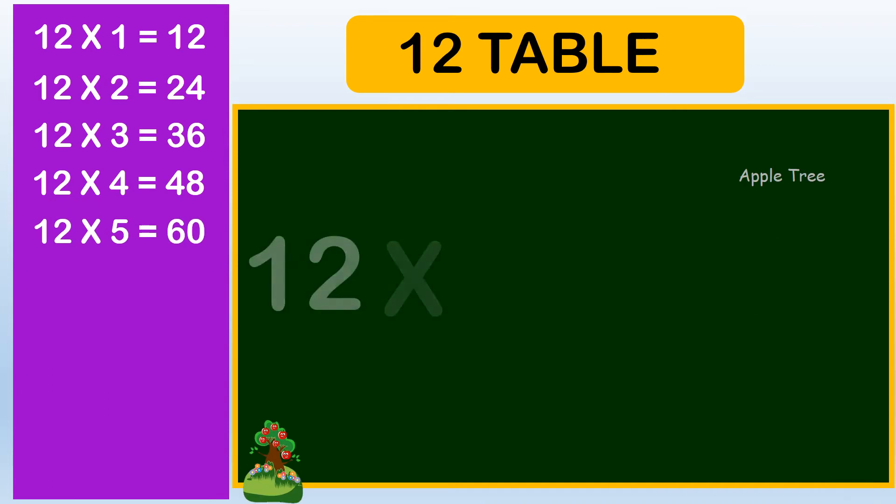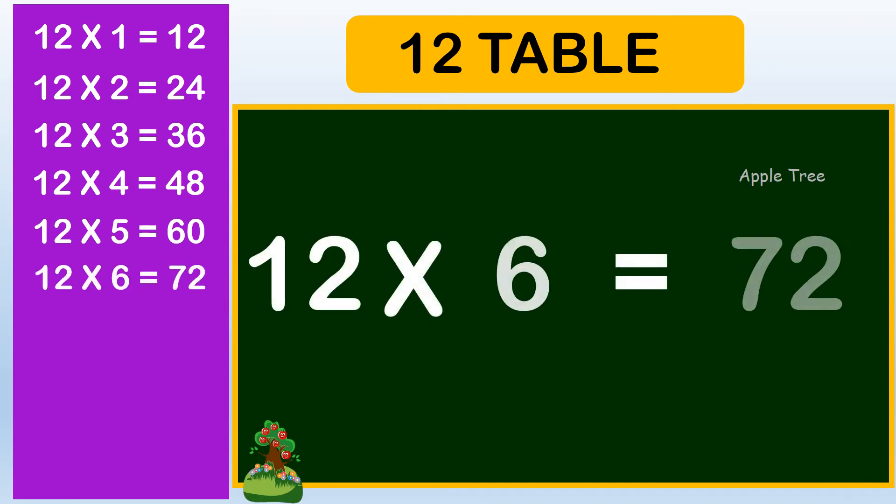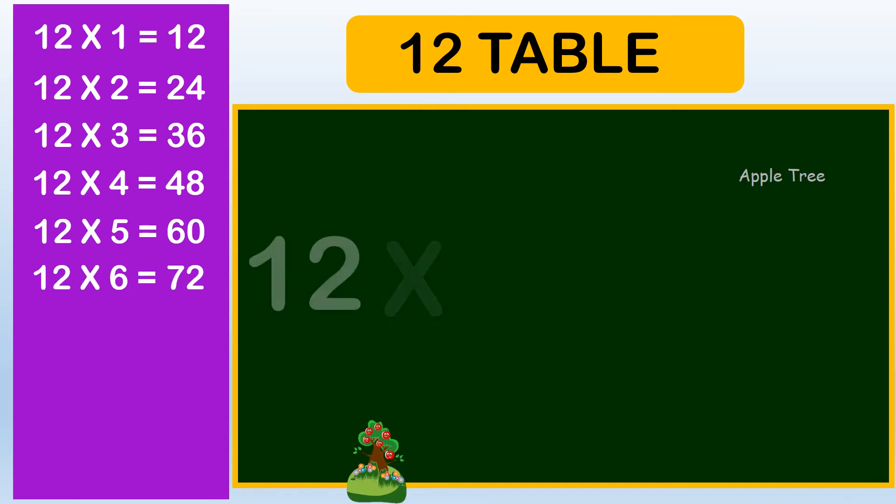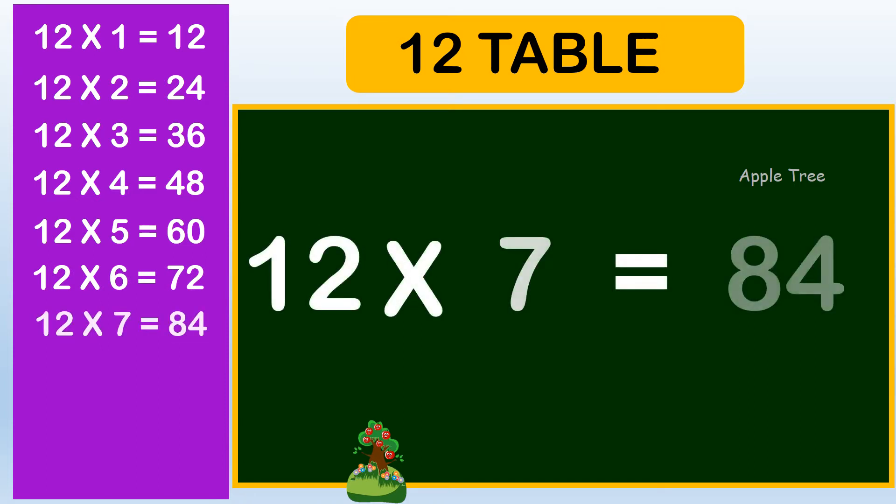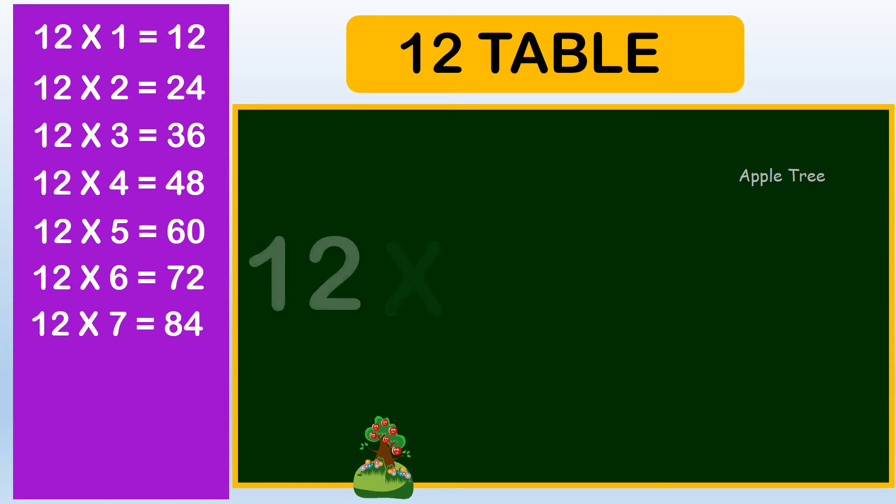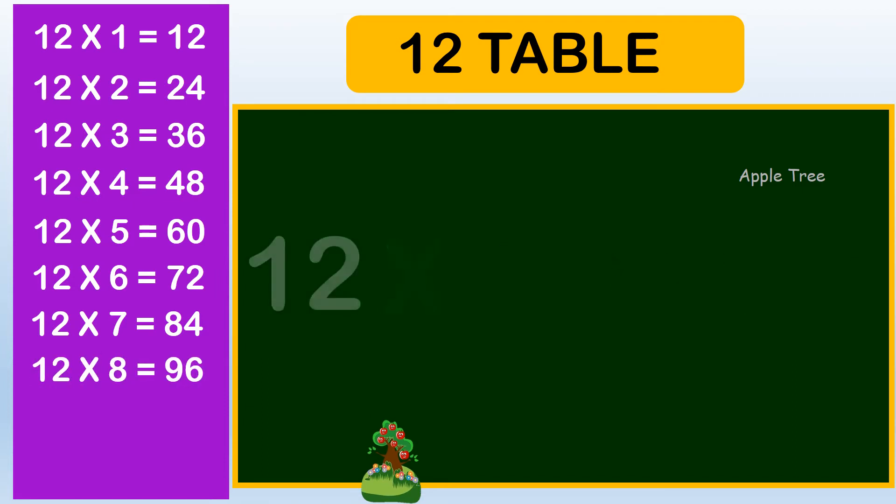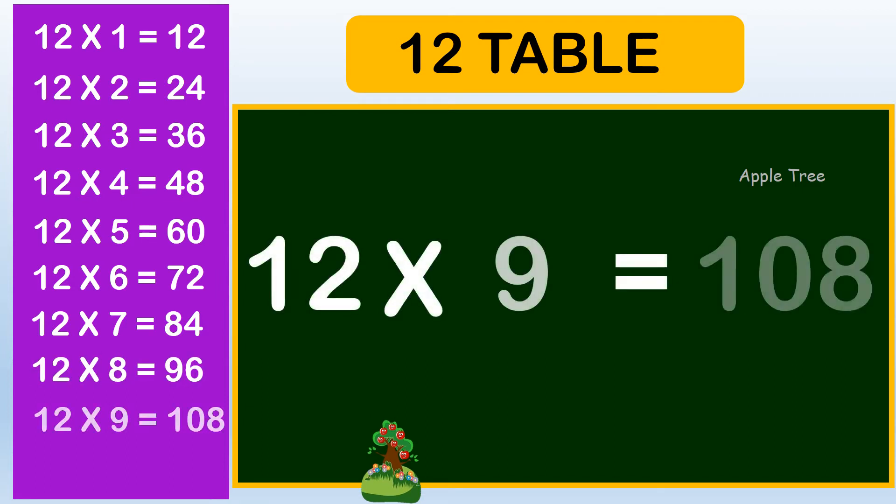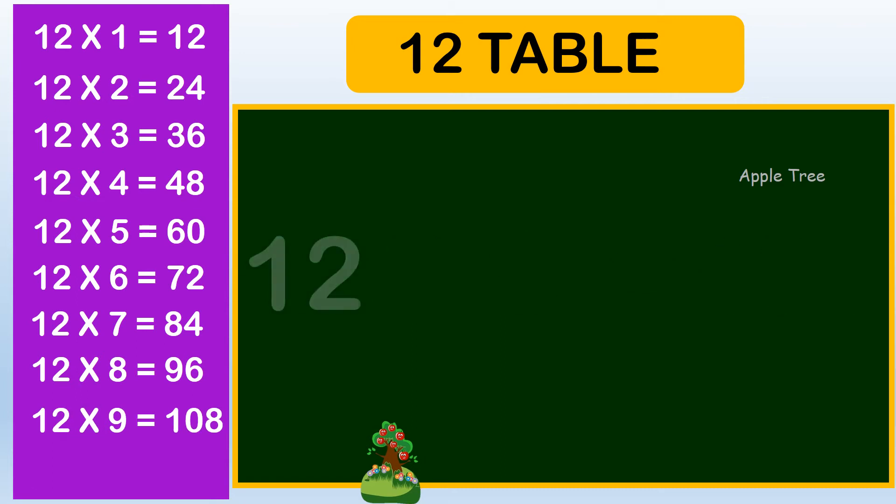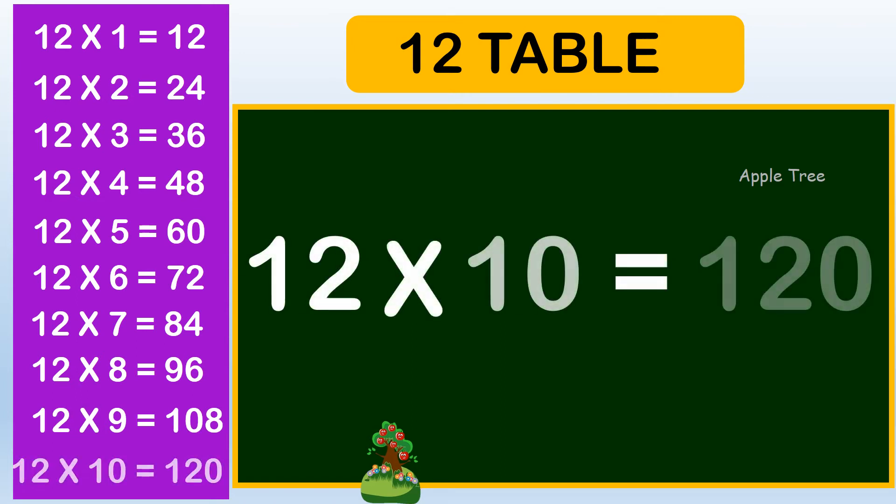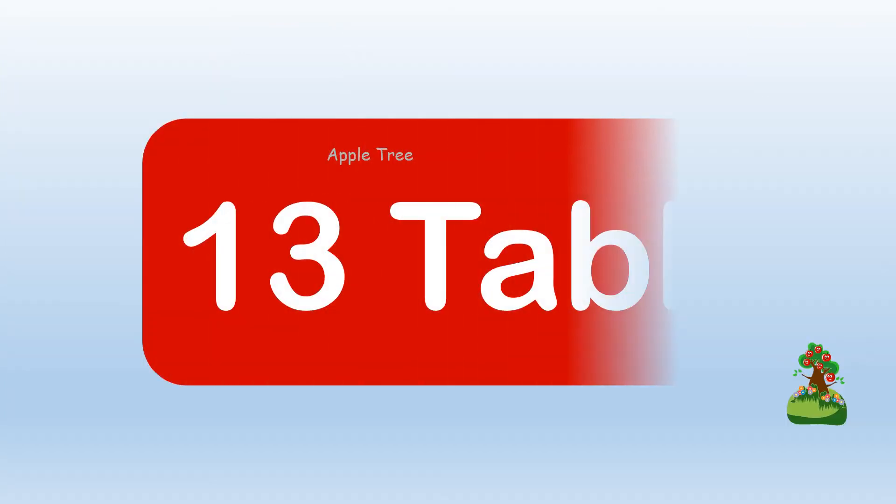12 six are 72, 12 sevens are 84, 12 eights are 96, 12 nines are 108, 12 tens are 120. Table for 13.